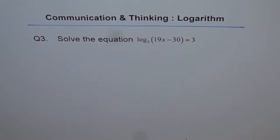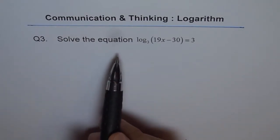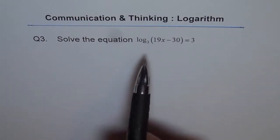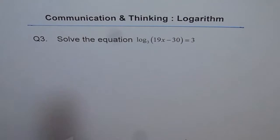In this final phase of communication thinking problems, here is question 3. Solve the equation log to the base 3 of 19x minus 30 equals 3, right?